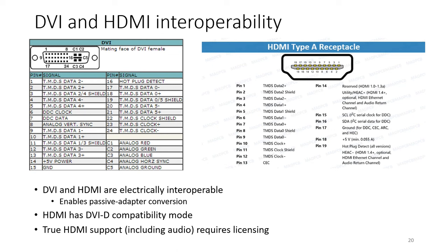On the left is the DVI pinout, on the right is the HDMI pinout. You can see the signaling - TMDS - is almost very similar. In fact, DVI and HDMI are electrically interoperable. You can find passive DVI-to-HDMI adapters online. HDMI has a DVI compatibility mode built in. DisplayPort to HDMI requires an active adapter since DisplayPort is a packetized way of sending data. HDMI is very similar to VGA because they both follow this electron gun signal timing model - HDMI started from DVI, and DVI started from VGA in terms of how they follow the standards.